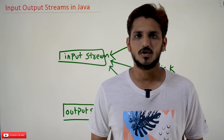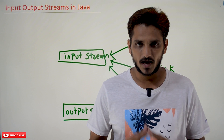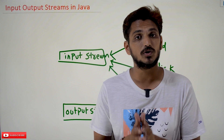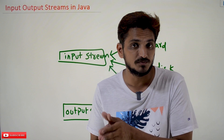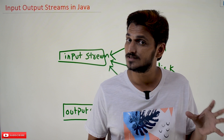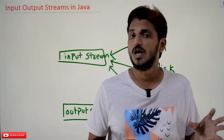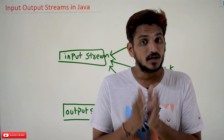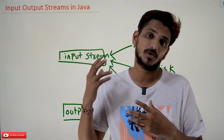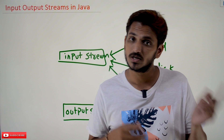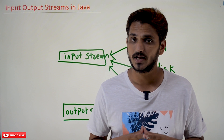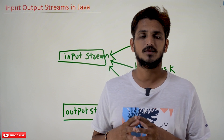Hi, welcome to Learning Monkey. I am Raghu here. In this class, we will discuss about input and output streams in Java. In our last class, we clearly discussed about runtime polymorphism. We are going to use that concept here. Please watch that class and come back here. The link for the playlist is provided in the description below.